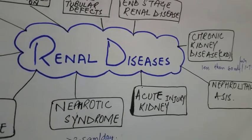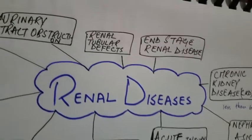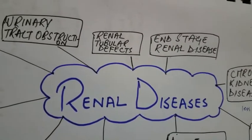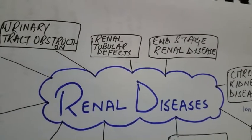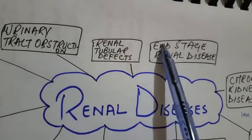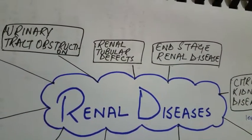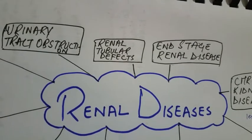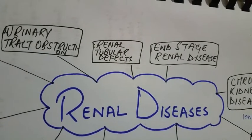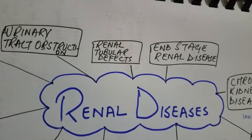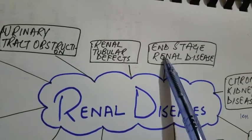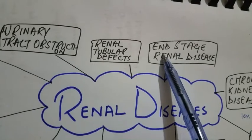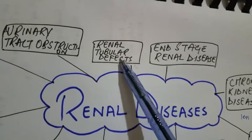End-stage renal disease occurs when the GFR is less than 5% of normal.